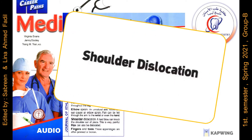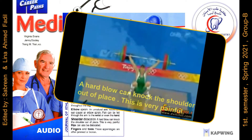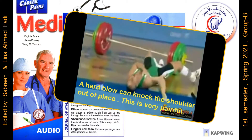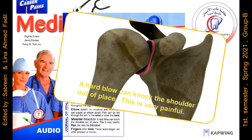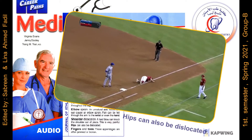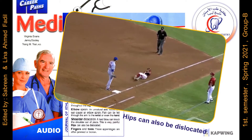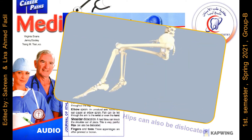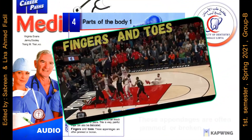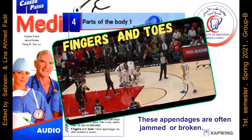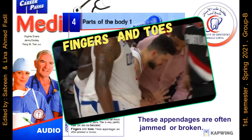Shoulder Dislocation. A hard blow can knock the shoulder out of place. This is very painful. Hips can also be dislocated. Fingers and toes: these appendages are often jammed or broken.